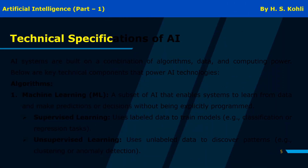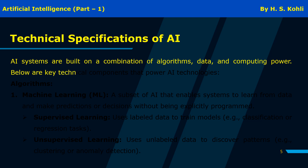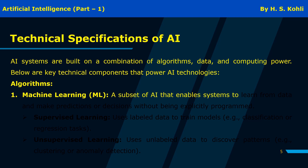Technical Specifications of AI: AI systems are built on a combination of algorithms, data, and computing power. Key technical components include algorithms and machine learning (ML) — a subset of AI that enables systems to learn from data and make predictions or decisions without being explicitly programmed.